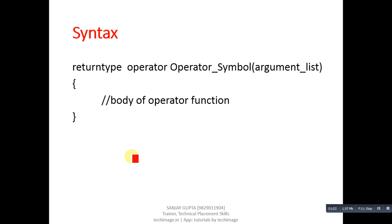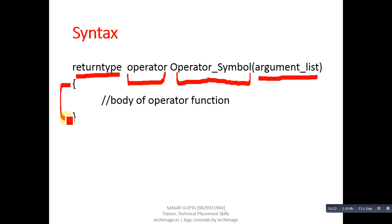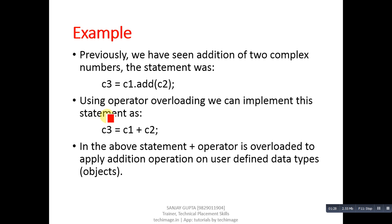You can understand this concept with the help of the syntax. First you have the return type, then 'operator' is a keyword, then the operator symbol you want to overload, and explicit argument data types are mentioned in the parentheses. Inside the braces you define the body of the overloaded operator function.